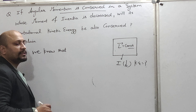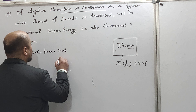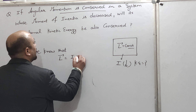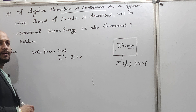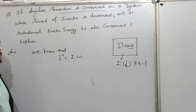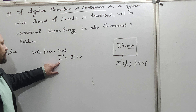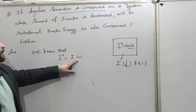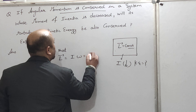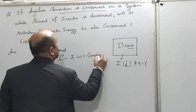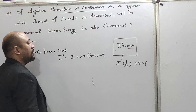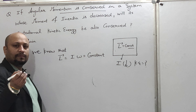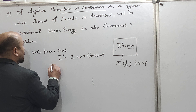Let us check. To prove this, we first need to know the relation between angular momentum and moment of inertia. We know that L is equal to I into omega. This relation is well known to us: L = Iω. And what is given here? Angular momentum L = Iω is constant.